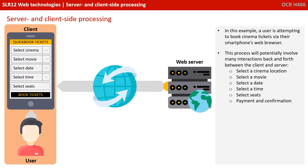In this example, a user is attempting to book cinema tickets via their smartphone's web browser. This process will potentially involve many interactions back and forth between the client and server, as they select a cinema location, followed by a movie, then a date, time, seats, and finally enter payment and confirmation details.